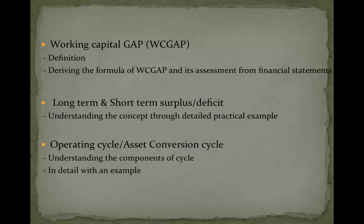Then we will focus on the long-term sources and uses of funds and short-term sources and uses of funds. It is very important to understand what source of funds the company requires and what will be its end use. For example, working capital is a short-term source of funds whereas a term loan is a long-term source of funds. Working capital is used for building current assets, whereas a term loan is used for building the fixed assets of a company. We will understand this concept in more detail by taking a practical example.